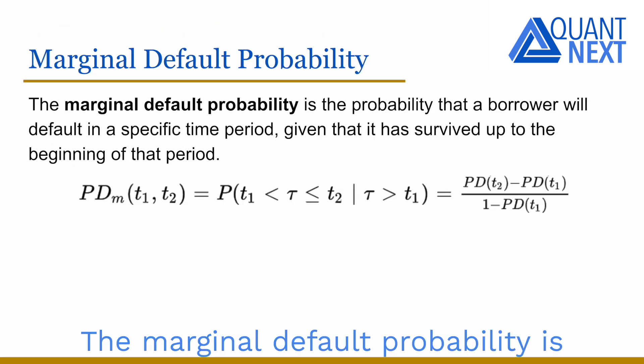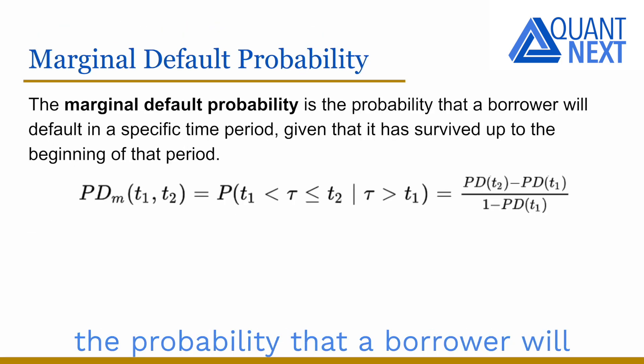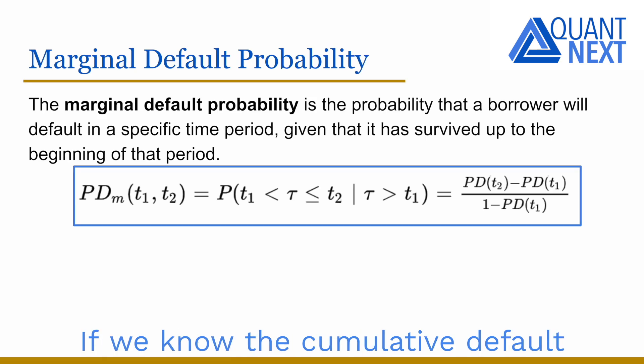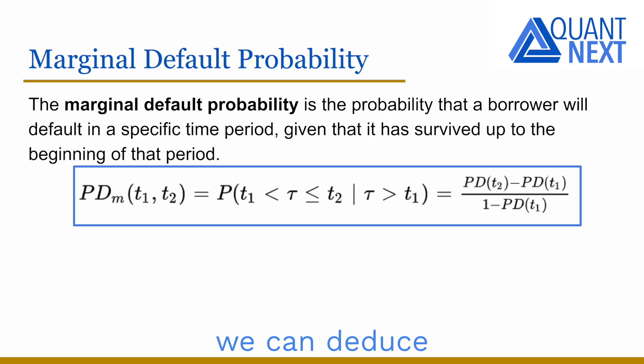The marginal default probability is the probability that a borrower will default in a specific time period, given that it has survived up to the beginning of that period. If we know the cumulative default probability at t1 and t2, we can deduce the marginal default probability between t1 and t2 with the following expression.